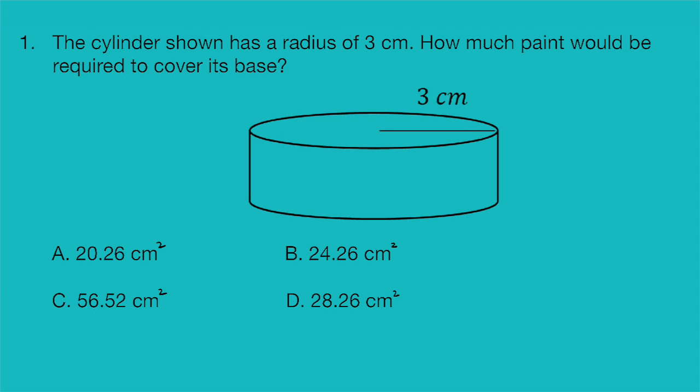Question one. The cylinder shown has a radius of three centimeters. How much paint would be required to cover its base? A, 20.26 centimeters squared. B, 24.26 centimeters squared. C, 56.52 centimeters squared. Or D, 28.26 centimeters squared.